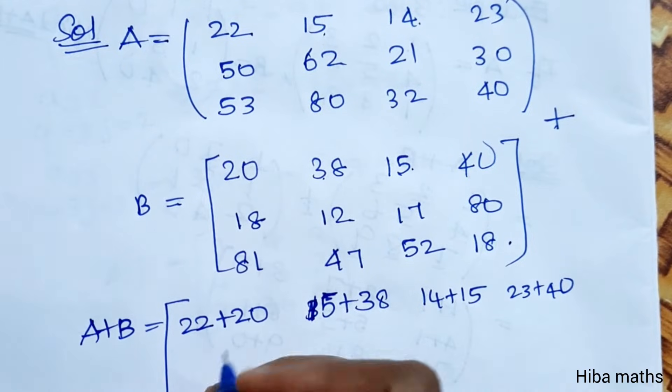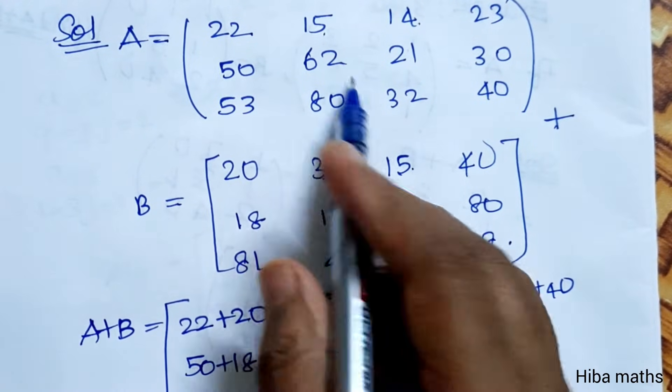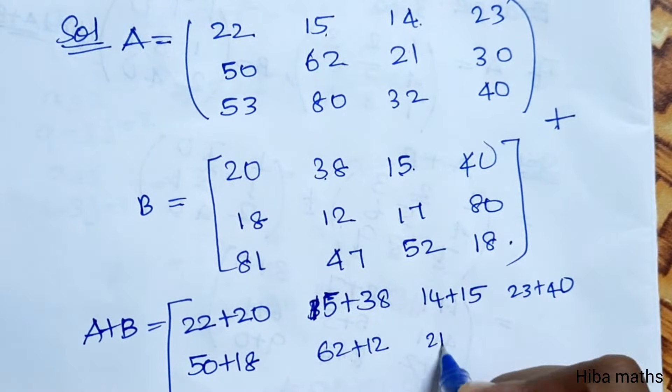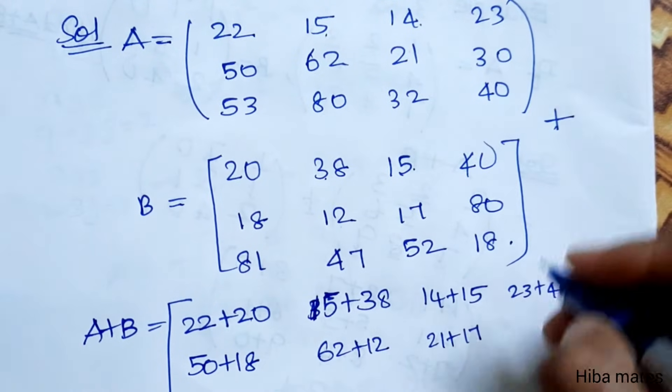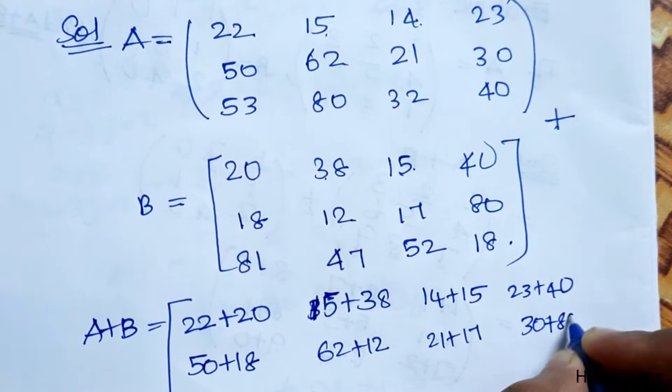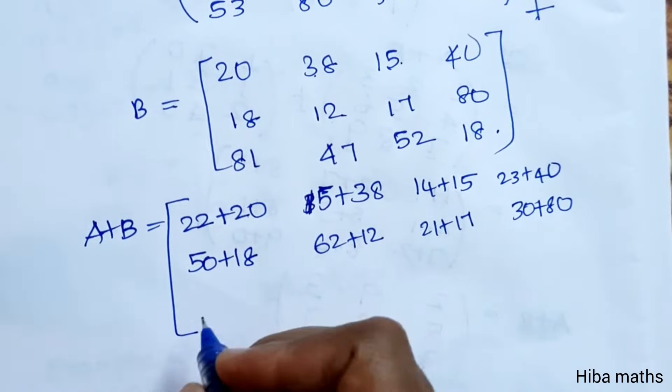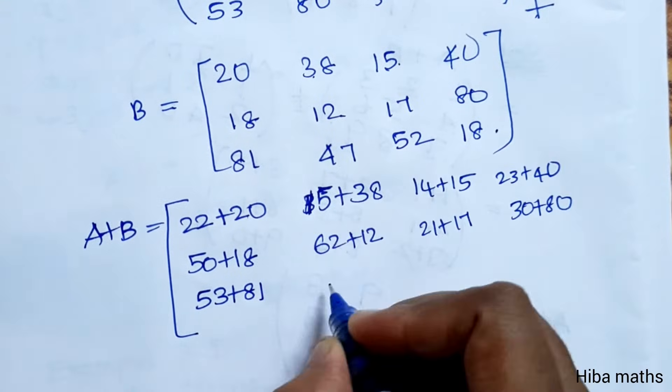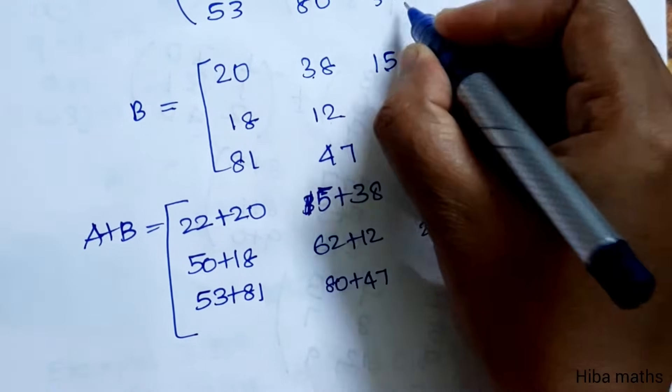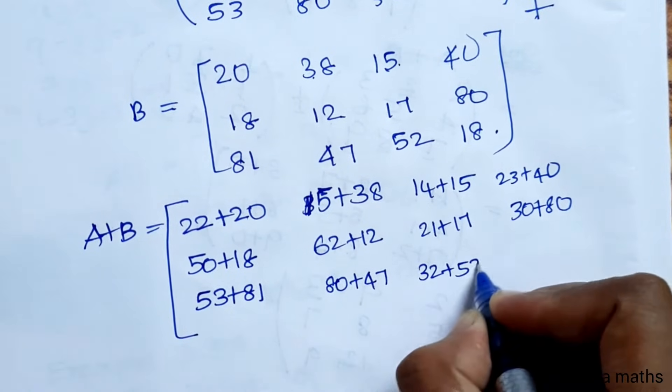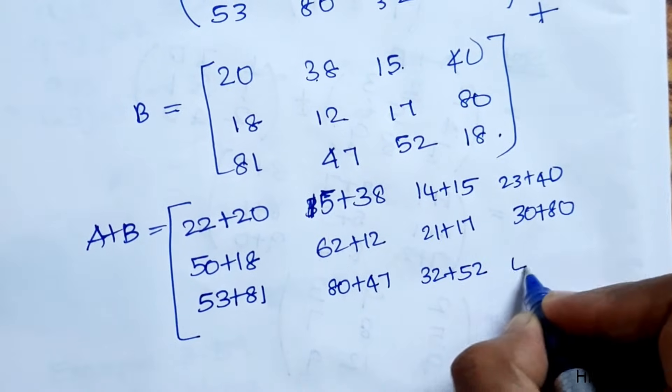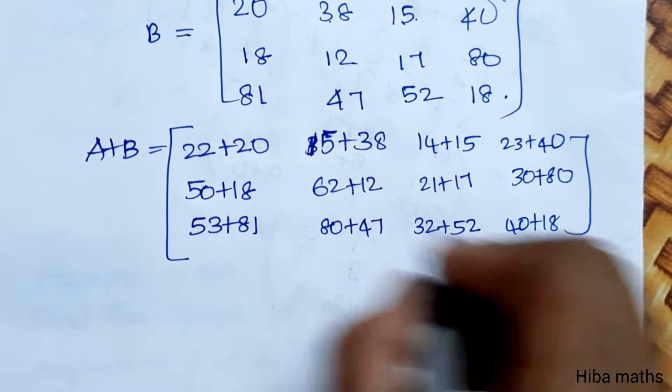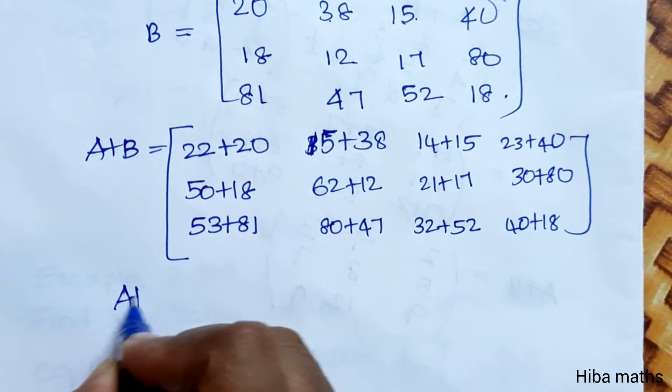Now 50 plus 18, 62 plus 12, 21 plus 17, 30 plus 80. So 53 plus 81, 80 plus 47, 32 plus 52, 40 plus 18.